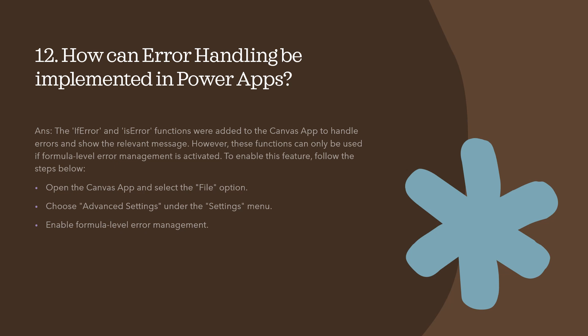Question number 12: how can error handling be implemented in Power Apps? The IfError and IsError functions were added to the Canvas App to handle errors and show relevant messages. However, these functions can only be used if formula-level error management is activated. To enable this feature, open the Canvas App, go to File > Options, choose Advanced Settings under the Settings menu, and enable formula-level error management. Once enabled, you can use the IfError and IsError functions to show a relevant message when an error occurs.